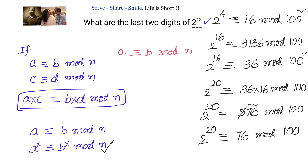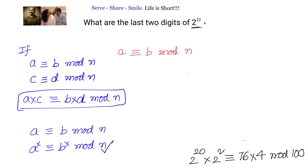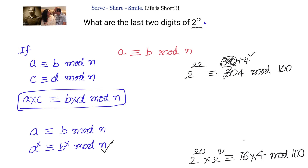We will multiply by 2 squared. So 2 power 20 times 2 squared is congruent to 76 times 4 modulo 100. We can write: 2 power 22 and 76 times 4 are congruent modulo 100. Now 76 times 4 is 304. We can write 304 as 300 plus 4. Since 300 is divisible by 100, it goes away, and we are left with only 4.